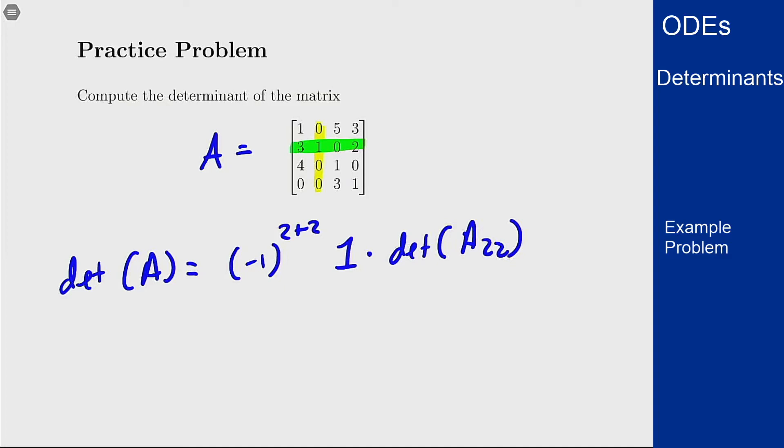I'm going to remove that and put that there. So what I get then for my expression here is negative 1 to the 4, which is just 1, times 1, times the determinant of that minor, which if I take out that row and that column is [1 5 3; 4 1 0; 0 3 1].